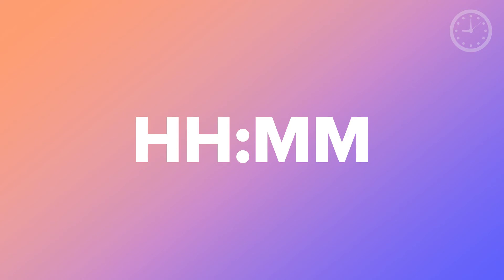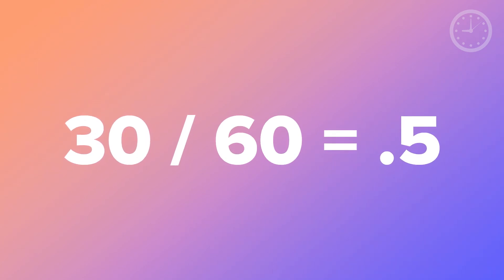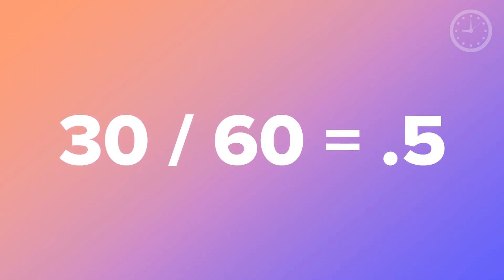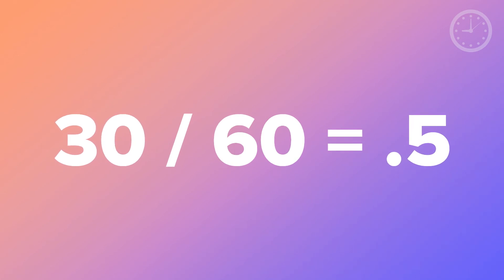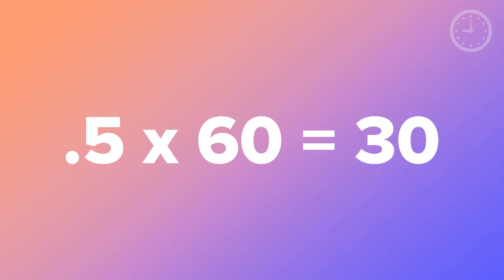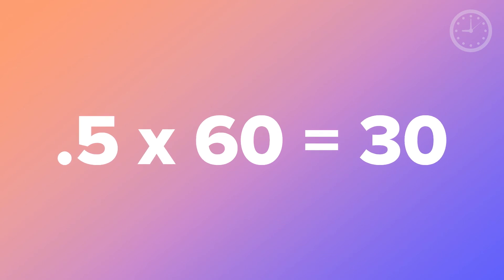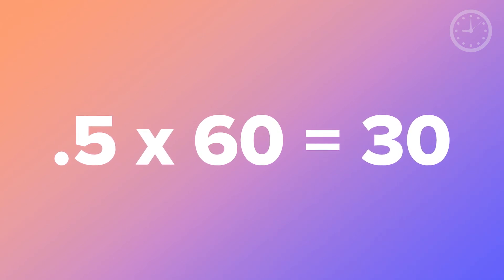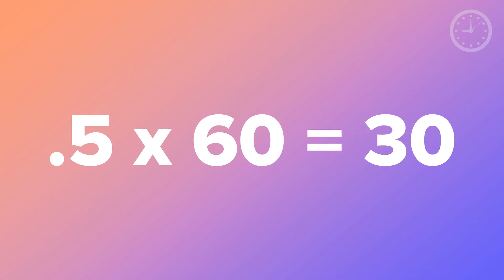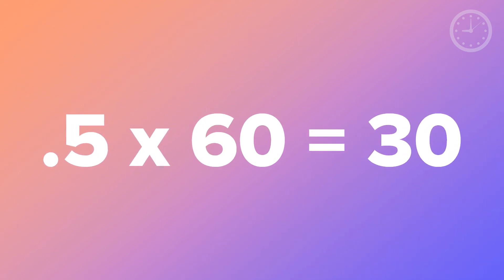Let's say you're looking for decimal hours and you're starting in hour-hour minute-minute format. What you're going to do is take the number of minutes, divide by 60, and that gives you the decimal format. If it's the opposite and you're looking for the number of minutes, you start with the decimal number, multiply by 60, and that gives you the number of minutes — which would be the hour-hour minute-minute format.